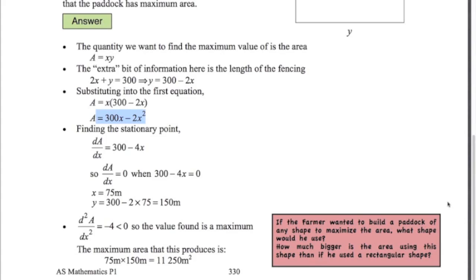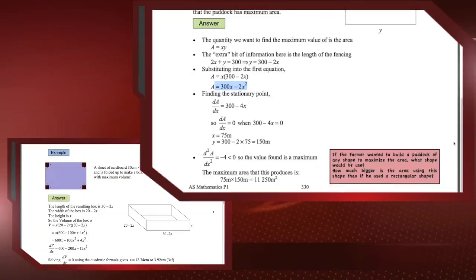It's good at this point to start thinking about: what if the farmer wanted to make the biggest area possible? Should he make like half a hexagon at the side? What kind of shape should he make the fence so that it encloses the most area? Have a think about that — ask your maths teacher, it's a good problem to think about.